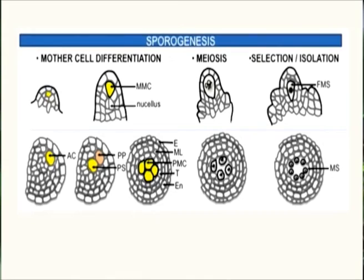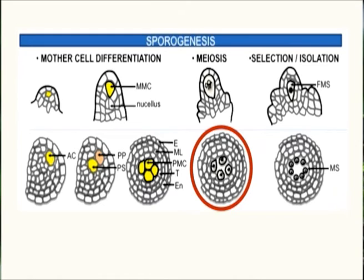In the micropyle region of the nucellus, usually a single hypodermal cell gets differentiated from other cells. It is called the primary archisporal cell, which divides periclinally to form a primary parietal cell and a primary sporogenous cell. The parietal cell may either remain undivided or undergo a few periclinal and anticlinal divisions so that the sporogenous cell gets embedded in the nucellar mass. The sporogenous cell then acts as the diploid megaspore mother cell and undergoes meiosis to give rise to four haploid nuclei.